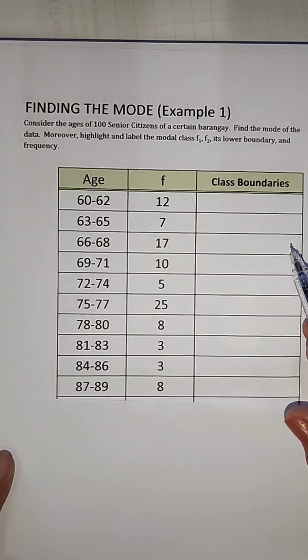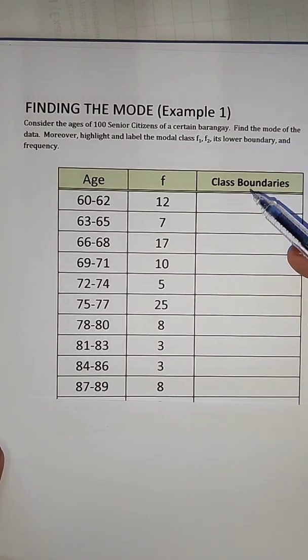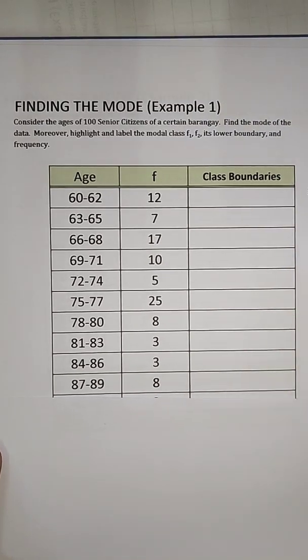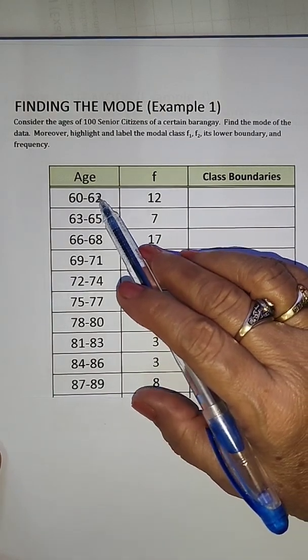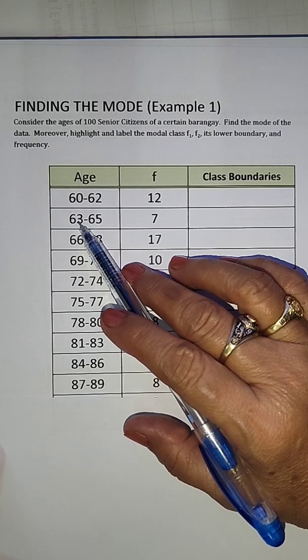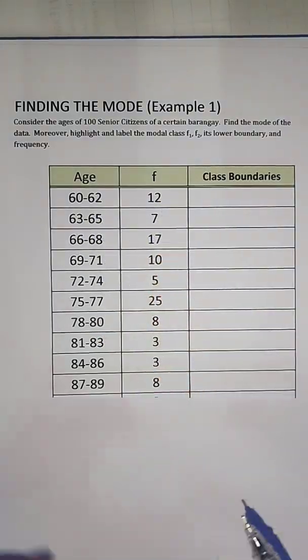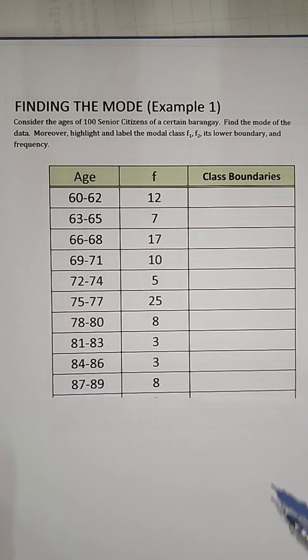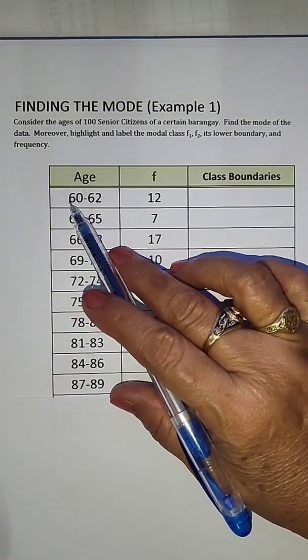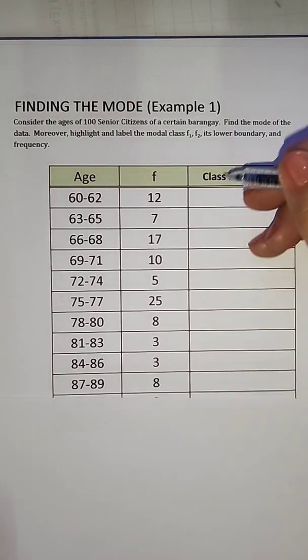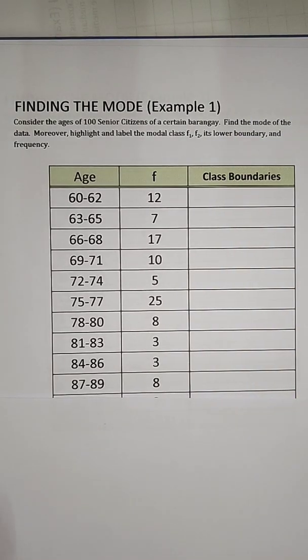Before we solve for the mode, let us complete first the third column. Since the difference between this number of 62 and 63 is only 1, then we will simply add 0.5 to the upper limits here and subtract 0.5 to the lower limits.